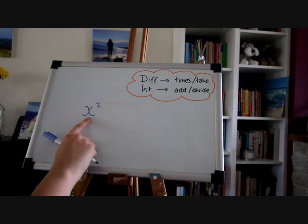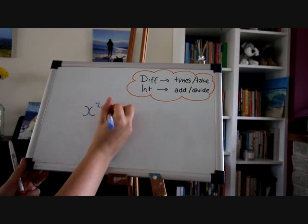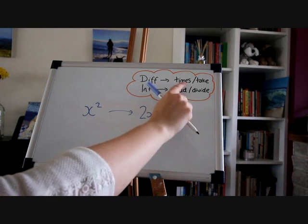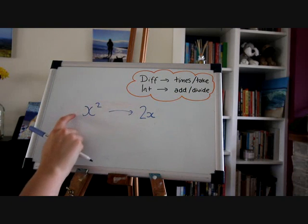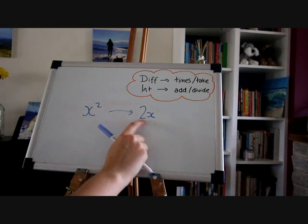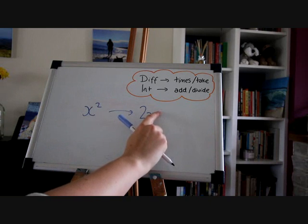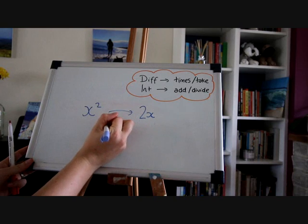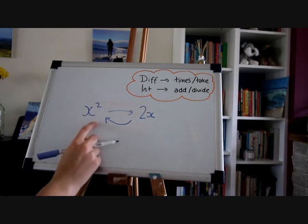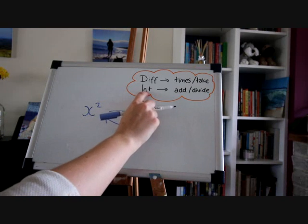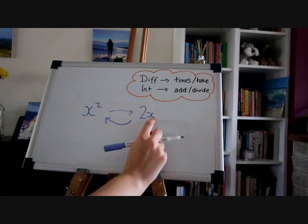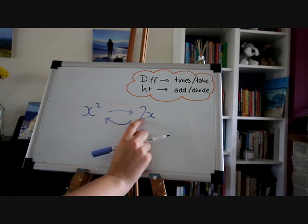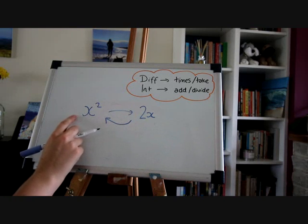Starting with a very basic function then, if we differentiate x squared then we know we get 2x. I've written up here to differentiate, multiply and take, meaning multiply the power down to the front to get a coefficient of 2, then take 1 away from the power to leave you with 1. Now integrating is the opposite of differentiation, so if we start with 2x and integrate we should get x squared. I've written up here to integrate, add and divide, so add 1 to the power first to get 2, and then divide the coefficient by the power, 2 divided by 2 to get 1.